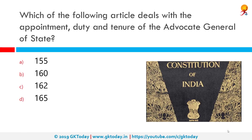Which of the following articles deals with the appointment, duty, and tenure of the Advocate General of the state? The correct answer is Article 165. Article 165 states that the Advocate General for the state shall be a person qualified to be appointed as a judge of the High Court. He holds office during the pleasure of the governor of the state, and his duty is to give advice to the state government on legal matters and perform duties of a legal character assigned by the governor.